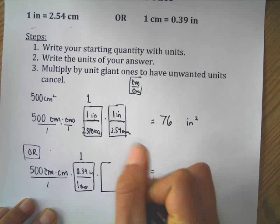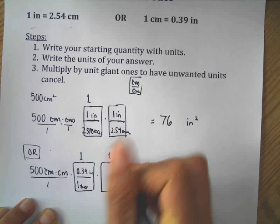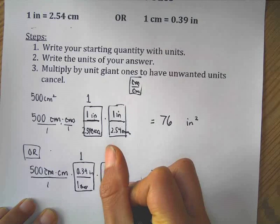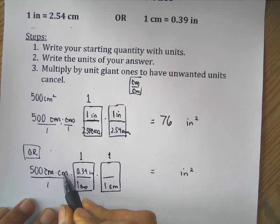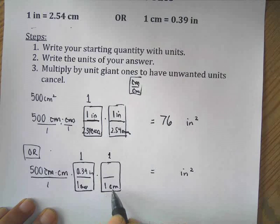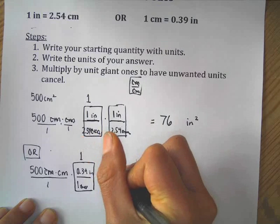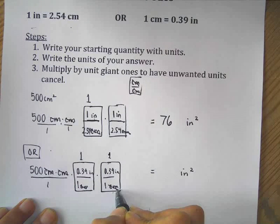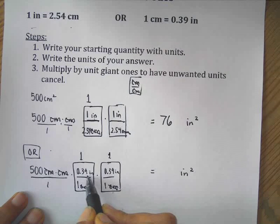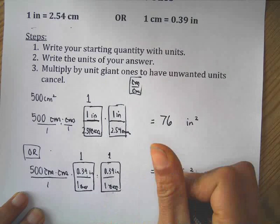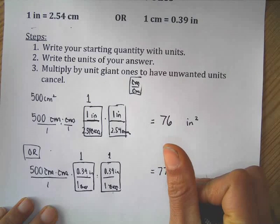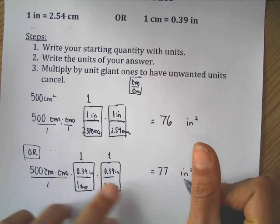I'm going to multiply by another unit giant one. Once again, I'm trying to get rid of the unwanted units. So if I have centimeters in the top, I'd put them in the bottom so that they cancel. One centimeter is the equivalent of 0.39 inches. Centimeters in the numerator, centimeters in the denominator cancel. So now I have 500 times 0.39 times 0.39. That gives me about 77 inches times inches, inches squared.